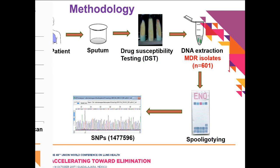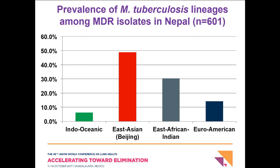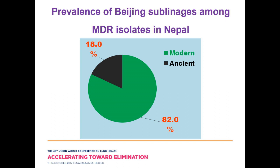Based on spoligotyping, this slide shows the prevalence of mycobacterium tuberculosis lineages among MDR isolates in Nepal. Beijing is the most prevalent, at around 50% of the 601 MDR isolates, followed by the East African Indian and other lineages, Euro-American, and the Indo-Oceanic lineage at around 6%. Based on multi-locus sequence typing, the modern Beijing sublineage (green) was 82% — the most prevalent — and the ancient was detected in only 18% of Beijing isolates.